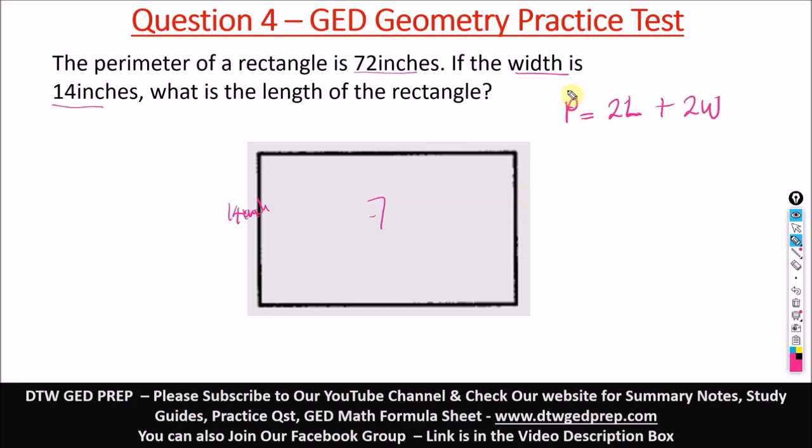Okay, from here we know that P is 72. We don't know our length, so let's leave it as 2L plus, we know our width as 14, that would be 2 times 14. So we have 72 equal to 2L plus, what is 2 times 14? That's 28.